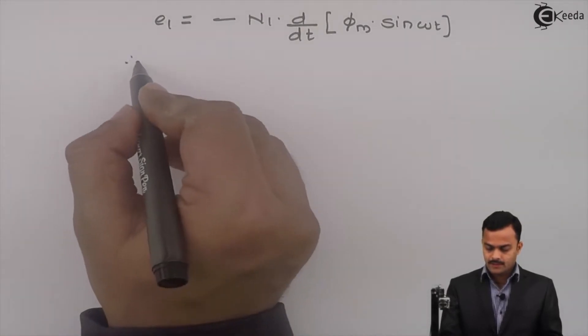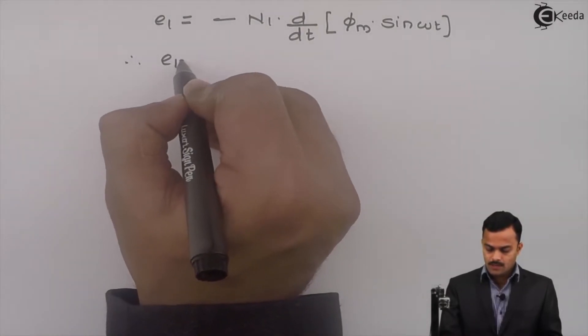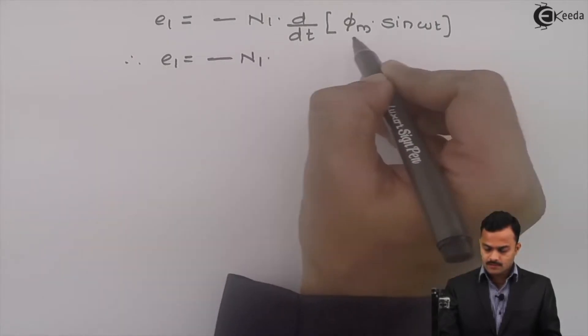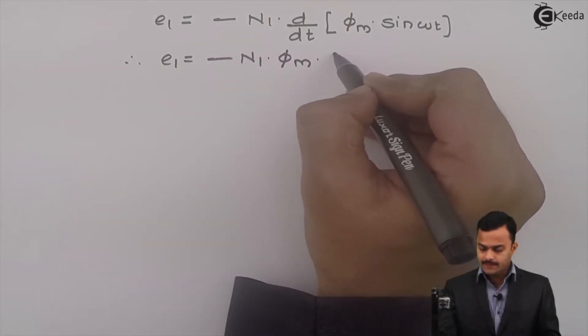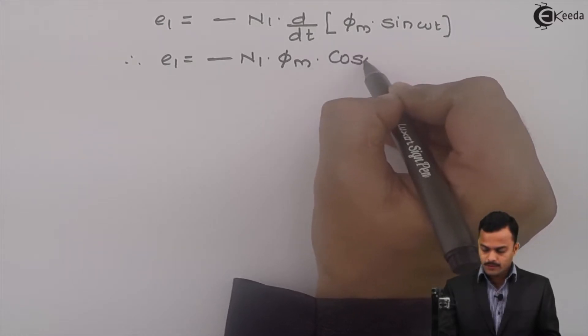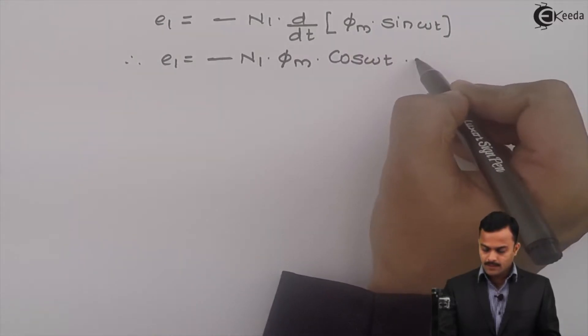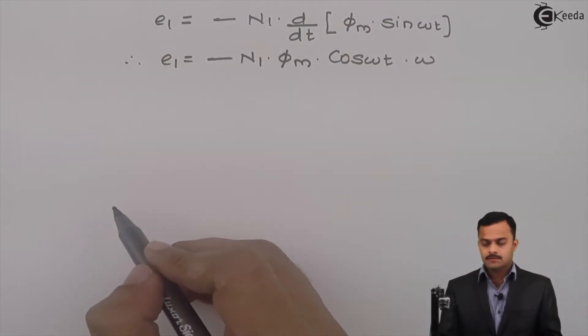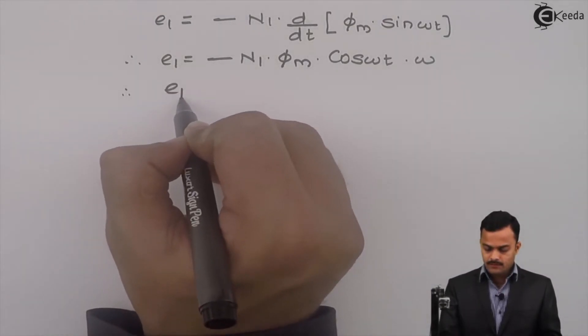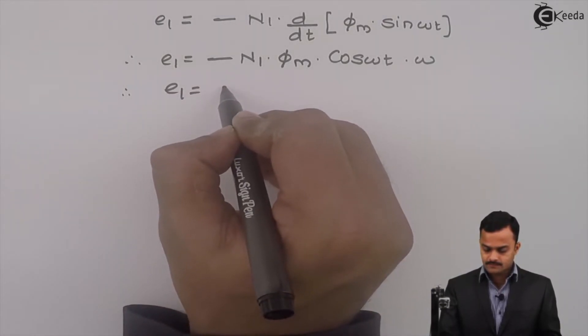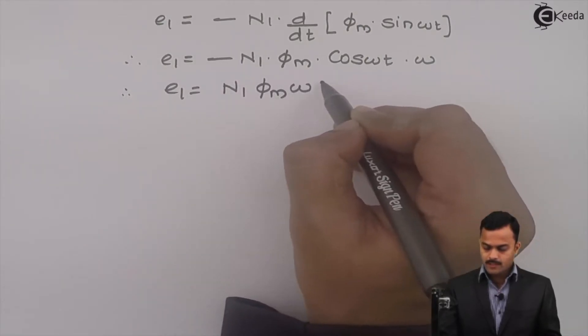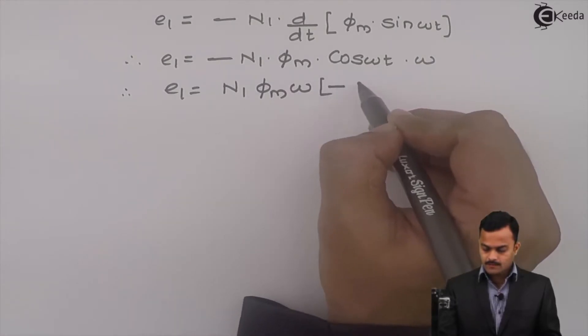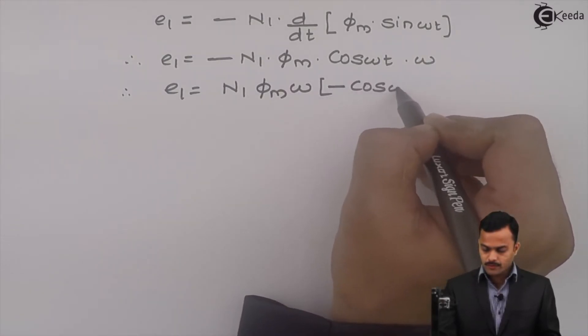If I take a derivative, I will get minus n1, phi m is a constant, sine omega t derivative is cos omega t multiplied by omega. Now this E1 I can write like this: n1 phi m omega minus cos omega t.